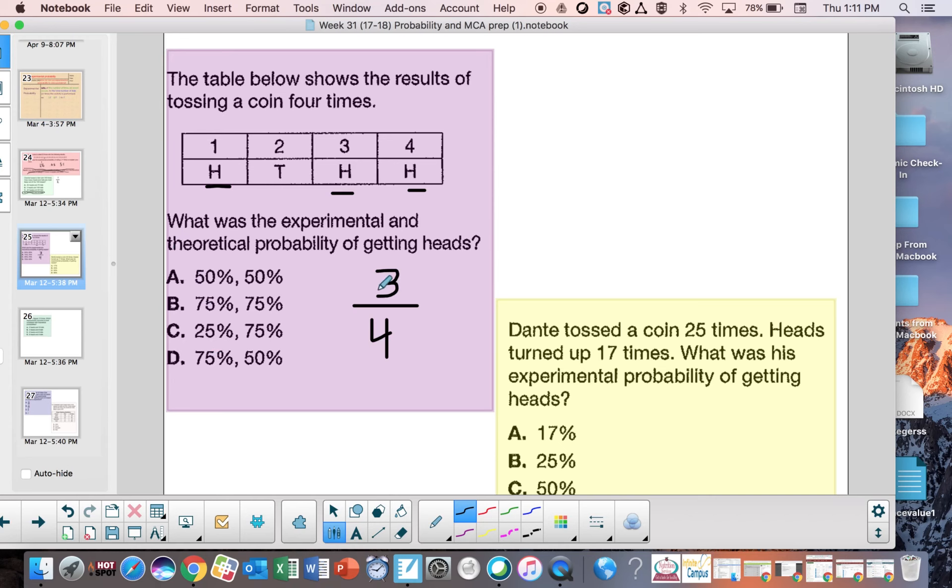I don't see three-fourths. So I have to be able to go between fractions and percents. I know three-fourths is 75%. I see 75% here, but I also see it here. Well, the second part of the question is the theoretical probability. I know the theoretical probability of getting heads or tails is 50%. The theoretical would not be 75, it would be 50. So my answer here is D. The experimental probability was in fact 75%, but the theoretical probability of getting heads is 50%, and that will never change.